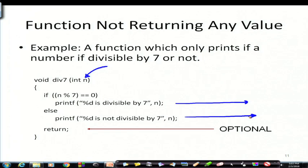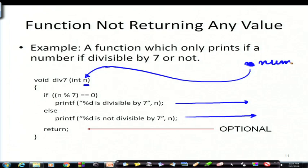The main function only reads some value of n and passes it to the function — n is the argument. The main program reads a value num and passes that value here. This num is also of type integer and the rest of the things are done by the function. It tests whether n is divisible by 7 and prints the appropriate message.